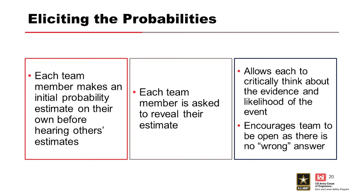Estimating probabilities is not a time to go fast — we want the case to stand up to the scrutiny of a diverse group of reviewers, so maintaining the integrity of the process is crucial. Each team member should make an initial probability estimate completely on their own before hearing any other estimates. This helps to avoid the bandwagon effect or anchoring bias, which is just following the opinion of the loudest or most prominent person in the room. We want to force each team member to think critically, looking at the evidence and the likelihood of each event.